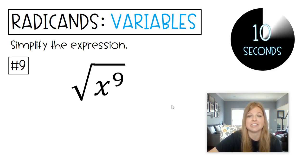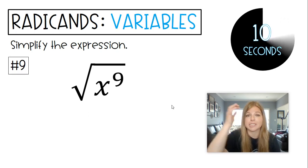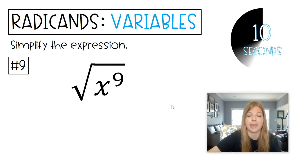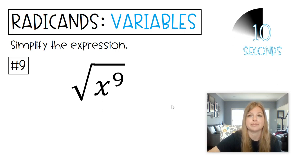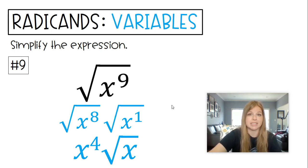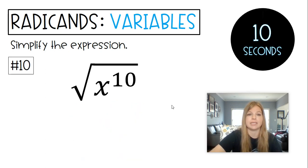Next one, square root of x to the ninth. This is our last odd exponent problem. Break one away from that nine, so it becomes the square root of x to the eighth times the square root of x to the first. Square root of x to the eighth is x to the fourth, and then just the square root of x.